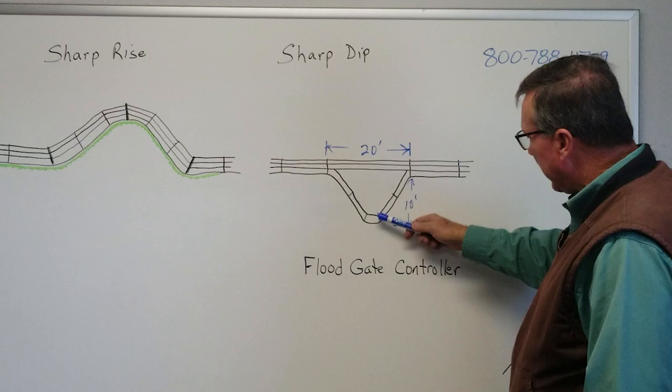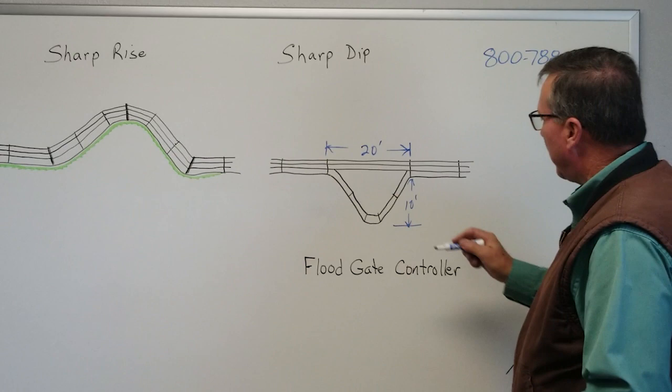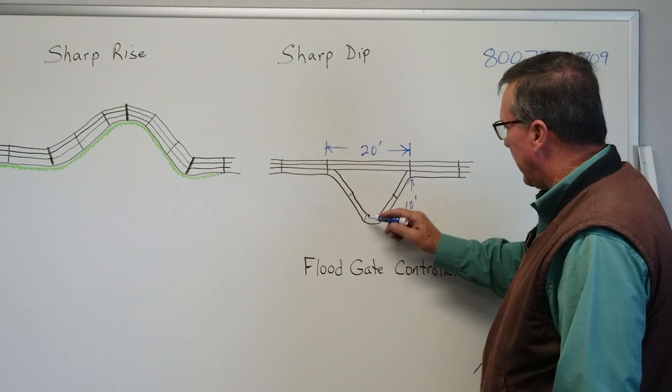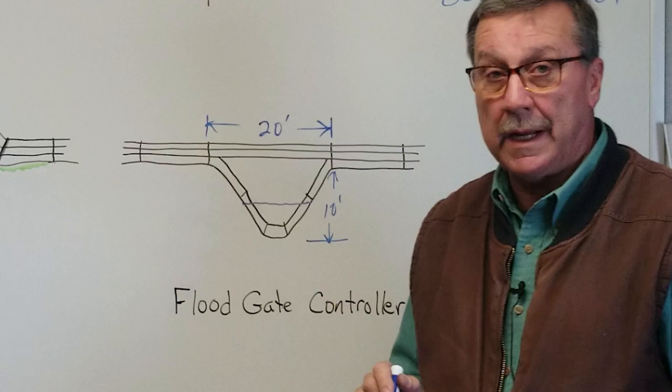Well, what happens now if you have a rain or a flood and water starts backing up in this ditch? If water gets up in this ditch, guess what it's going to do to your electric fence? It's going to short it out.